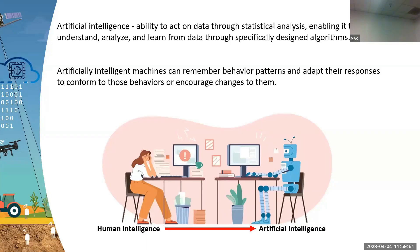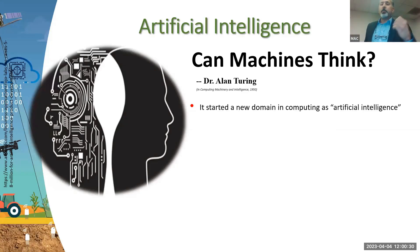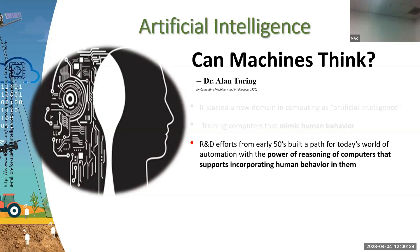Just as humans train their minds to build on past experiences and make complex decisions, the logical next step is translating human intelligence into machines — allowing machines to think, act, and learn in increasingly complex ways. Alan Turing, often considered the father of artificial intelligence, proposed the question 'Can Machines Think?' in 1950. This idea has been pursued for over 70 years, with the goal of enabling machines to mimic human behavior.